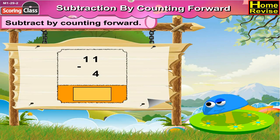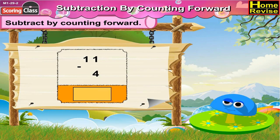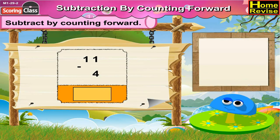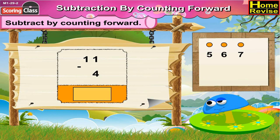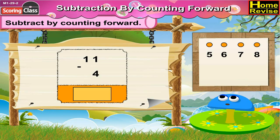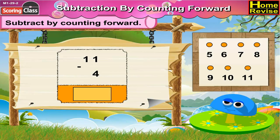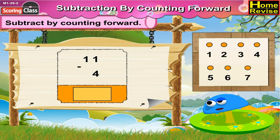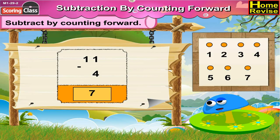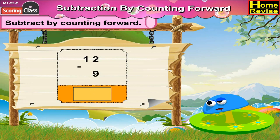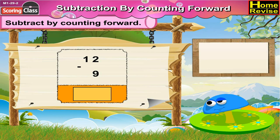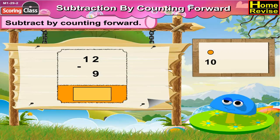11 minus 4. By counting forward from 4: 5, 6, 7, 8, 9, 10, 11. That is 7 steps. So 11 minus 4 is 7.